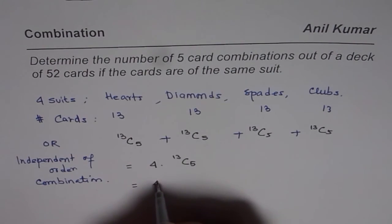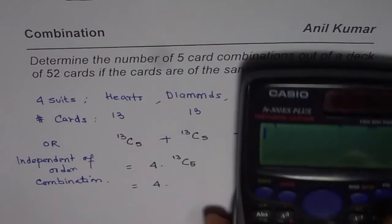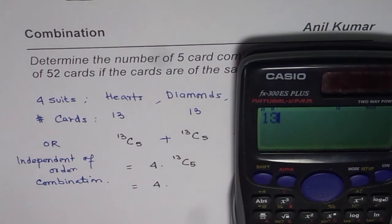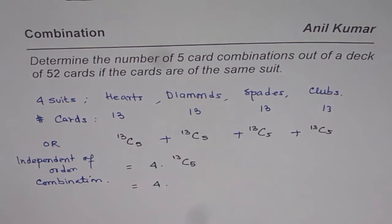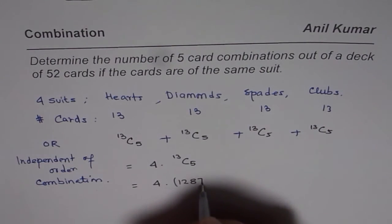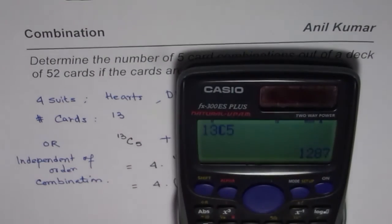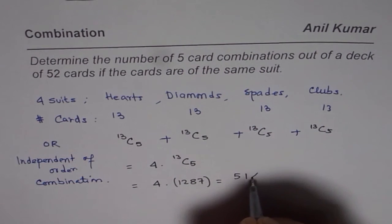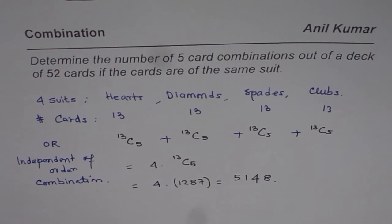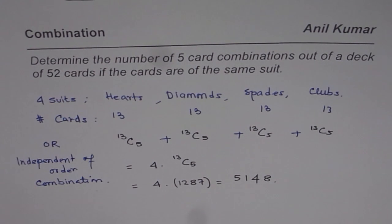Let's calculate: 13C5 equals 1287. So four times 1287 equals 5148. The number of combinations in which you can select five cards from a 52-card deck with all cards of the same suit is 5148. I hope that helps — thank you and all the best.